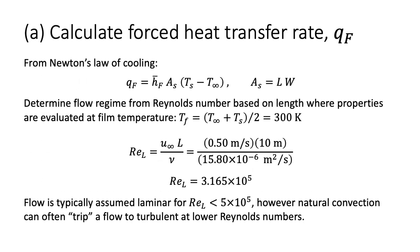For Part A, to calculate the heat transfer rate from the roof, we recall Newton's law of cooling, which gives the heat transfer rate by convection from a surface for a known average convection coefficient, surface area, and temperature difference. Assuming forced convection only, we begin by calculating the Reynolds number based on the length of the roof, using properties evaluated at the film temperature of 300 Kelvin. Substituting in values, we get a Reynolds number of about 32,000. Normally we would assume laminar flow; however, natural convection can often trip flow to turbulent at lower Reynolds numbers. Thus, we calculate heat transfer for both all-laminar and all-turbulent boundary layer limiting cases to get a range of reasonable values.